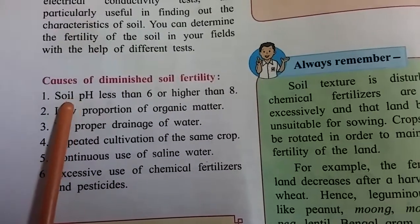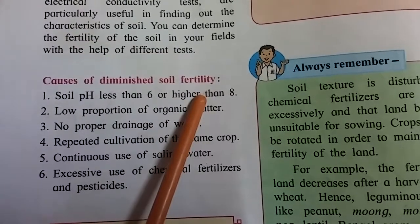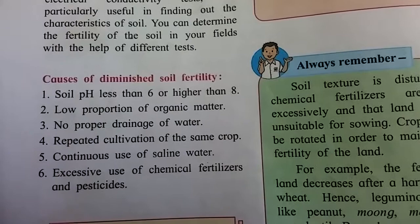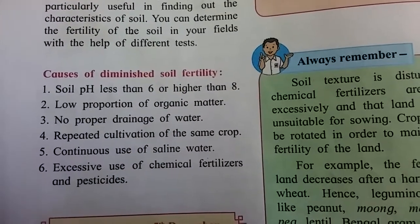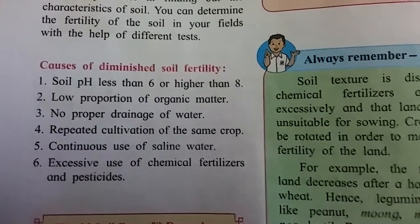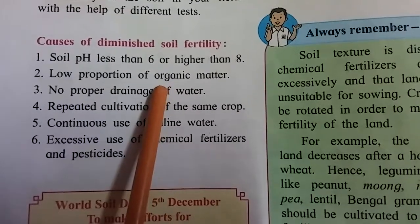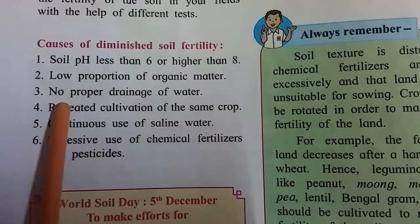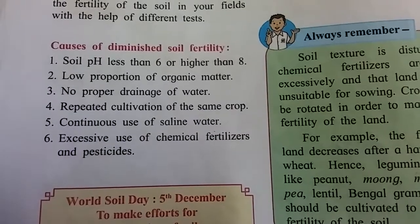There are six reasons for decreasing soil quality. First, if the pH level of soil is less than 6 or greater than 8, the fertility is not good. A pH of 7 means the soil is good for crops. Second, a low proportion of organic matter is a main cause. Third, no proper drainage — excessive water use — also reduces soil fertility.